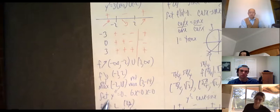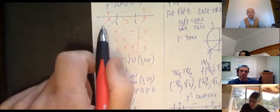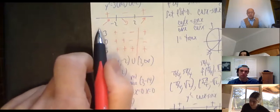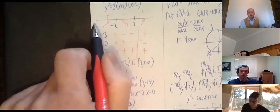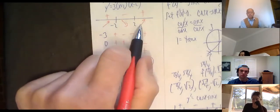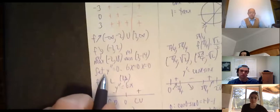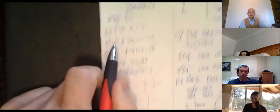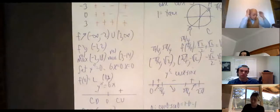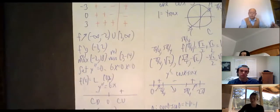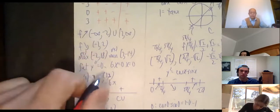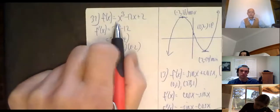f is increasing from (-∞, -2) ∪ (2, ∞) and decreasing from (-2, 2). Now for the second derivative: set f″ = 6x = 0, so x = 0. The y-coordinate: plug in 0 to get f(0) = 2. So the candidate inflection point is (0, 2).